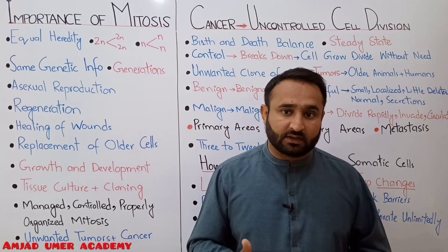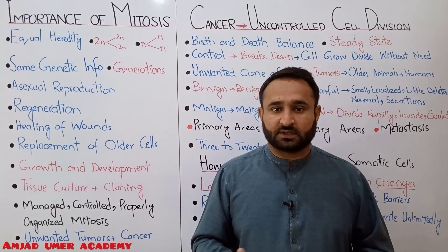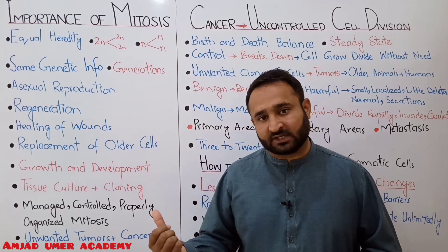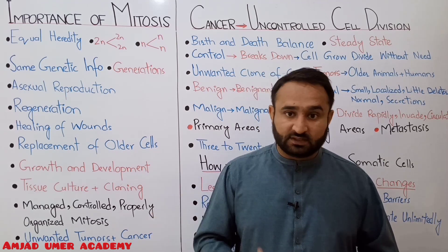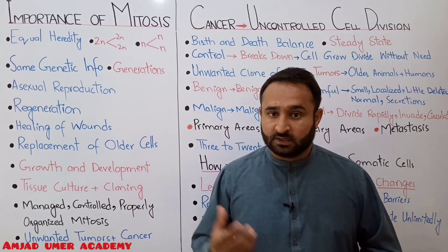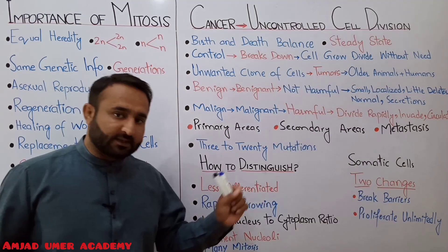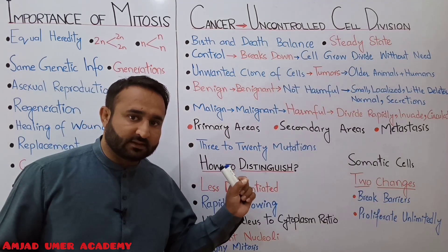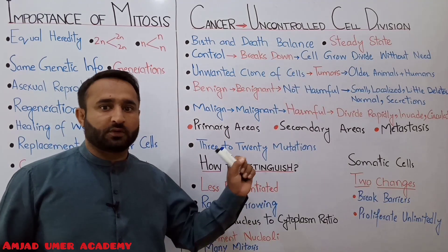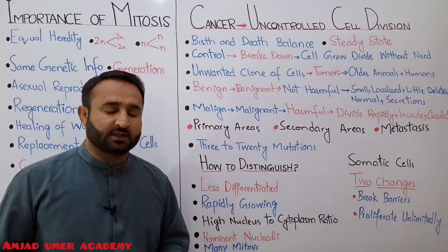When cells divide uncontrollably, unwanted cells form — these are tumor cells, which are lethal. This leads to diseases like cancer. The next topic is cancer — uncontrolled cell division.